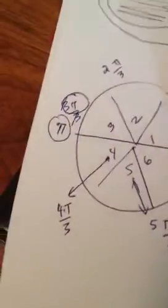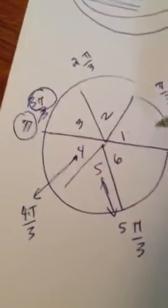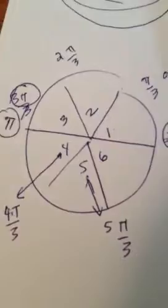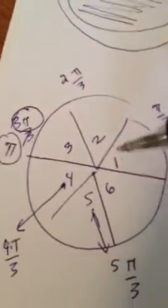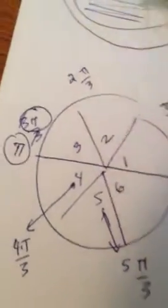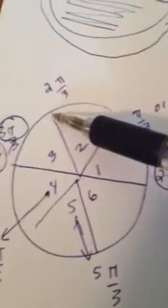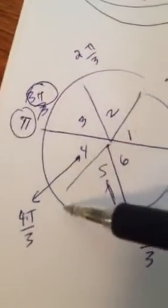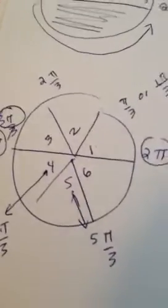First step, divide the circle into the little slices. If you want π over three, divide it by thirds on each side, and then you can write the numbers down. And so now you know that this has to be 2π over three, this has to be 4π over three, and so forth. Now let's continue. Let's do another one, just for fun.